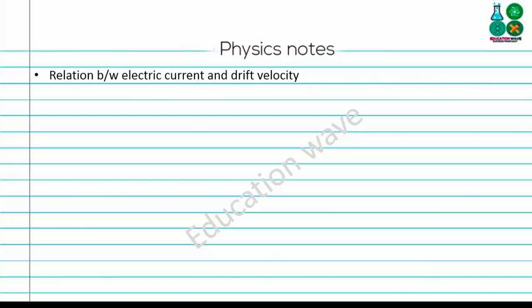Consider a conductor whose cross-sectional area is A and the length of this conductor is L. This conductor is connected with a V volt battery.